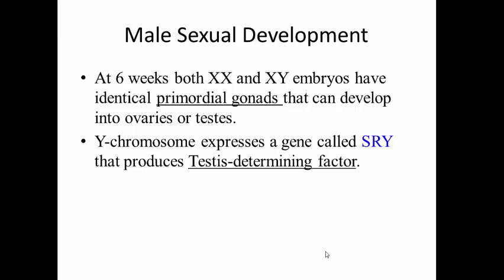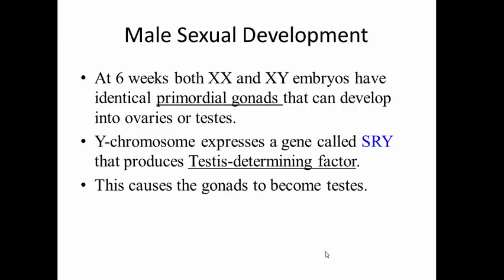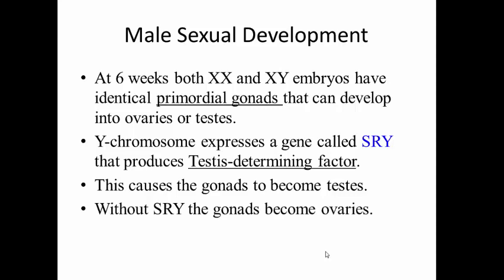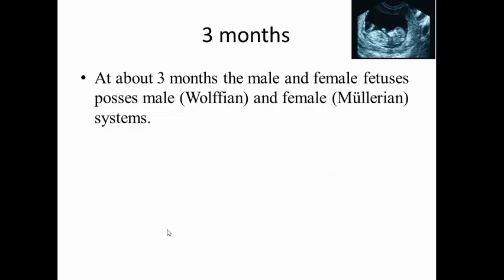If there is a Y chromosome, that tiny Y chromosome has one gene that produces a certain protein — it's known as the SRY gene. That produces a testis-determining factor, and this protein goes to the developing primordial gonad and tells it to turn into testes as opposed to ovaries. Without the SRY gene — in other words, two X chromosomes — the default is to turn into ovaries. By about three months, you have ducts feeding the testes or the ovaries. There are two types: the Wolffian system and the Müllerian system.